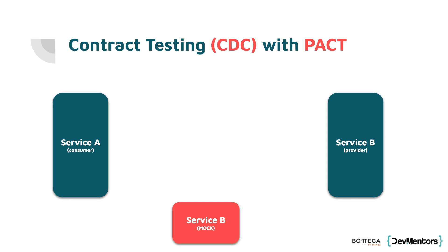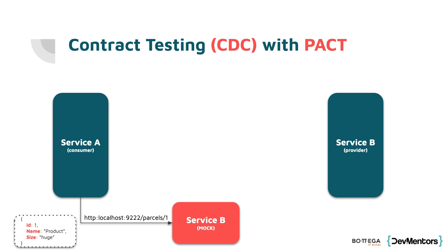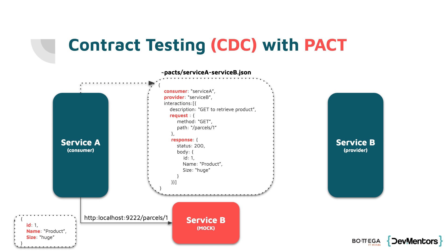So how would it look? Let's say we have service A and service B. According to the PACT strategy, on the consumer side we'll spin up some sort of mock for service B — the provider — and then actually make a fake call to a particular endpoint. The result would be a JSON file containing the definition of the contract. The PACT is generated on the consumer side with all the expectations about that particular endpoint.